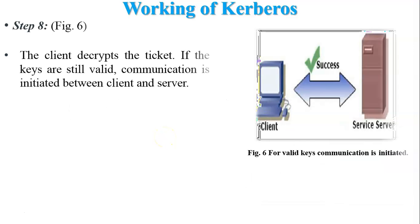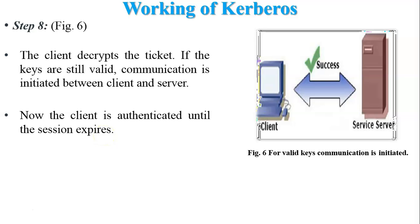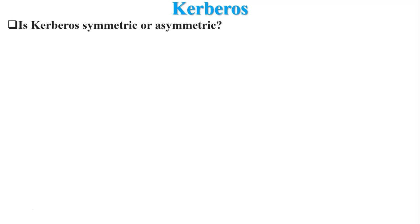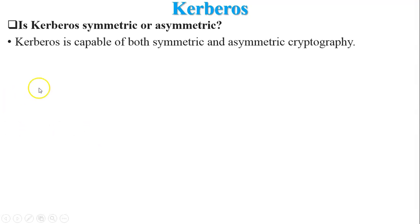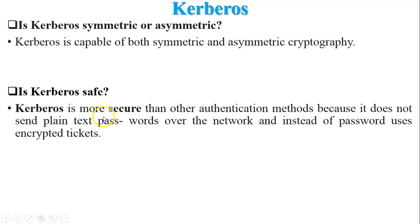Step 8: The client decrypts the ticket received from the server. If the keys are still valid, communication is initiated between the client and server, and the client is authenticated until the session expires. Regarding cryptography: Kerberos is capable of both symmetric and asymmetric cryptography. Regarding safety: Kerberos is more secure than other authentication methods because it does not send plain text passwords over the network, and instead uses encrypted tickets.